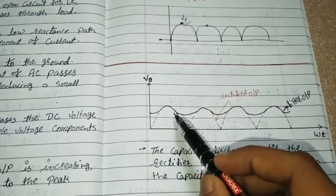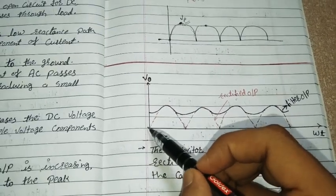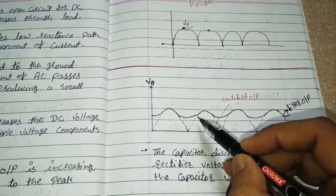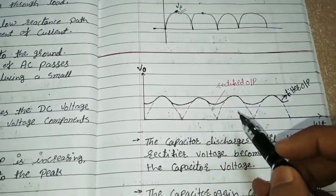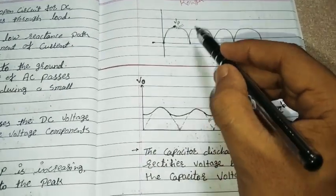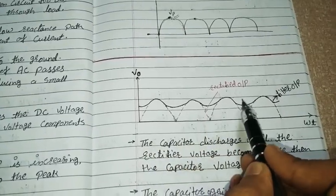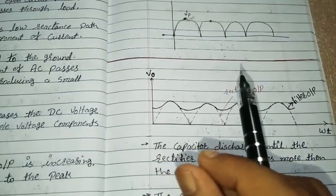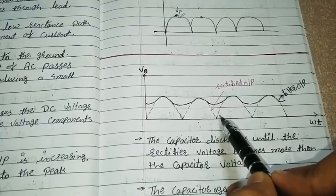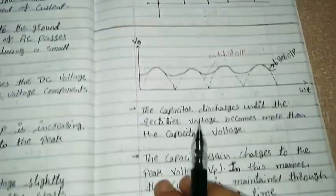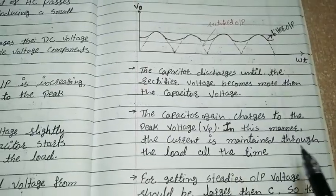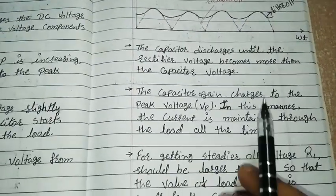So in this manner, when the rectifier output is decreasing, the capacitor is discharging, and when the rectifier output is increasing, the capacitor is charging. This charging and discharging procedure produces a stable output. The actual output of the rectifier is shown here, and the solid black line is the output from the filter, which is much smoother compared to the pulsating DC. The capacitor charges again to the peak voltage VP, and in this manner the current is maintained through the load at all times, giving a steadier output voltage.